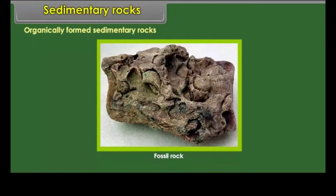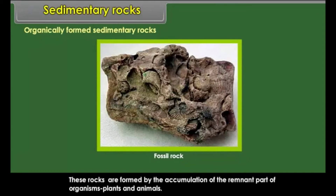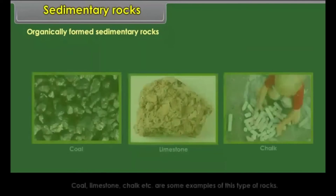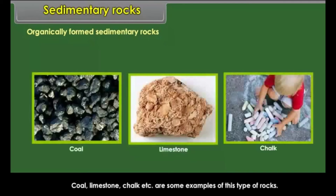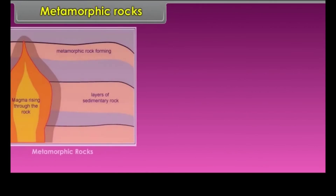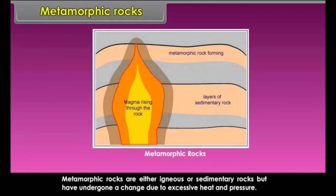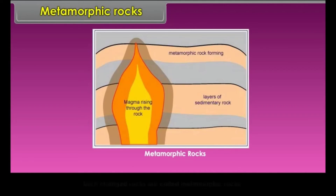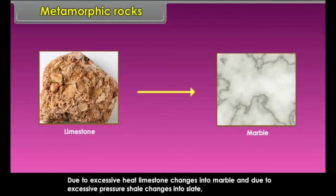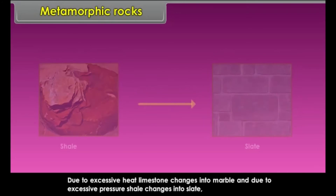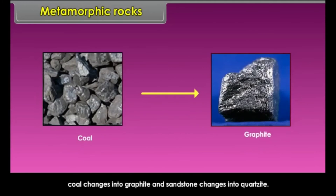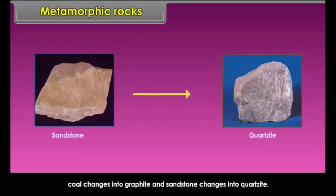Organically formed sedimentary rocks are formed by the accumulation of remnant parts of organisms — plants and animals. Coal, limestone, and chalk are examples of this type. Metamorphic rocks are either igneous or sedimentary rocks that have undergone a change due to excessive heat and pressure. Due to excessive heat, limestone changes into marble. Due to excessive pressure, shale changes into slate, coal changes into graphite, and sandstone changes into quartzite.